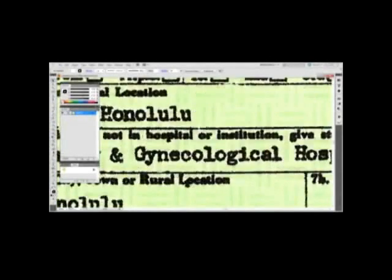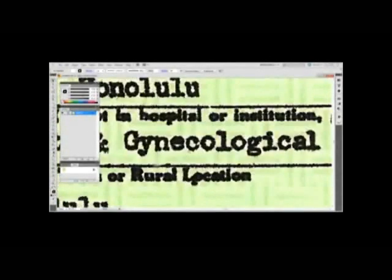First, the texture of the paper can be seen underneath the ink. Secondly, the image noise is consistent throughout the document as we scroll from top to bottom. To recap, we have one layer, one link, and noise that is consistent throughout the document.